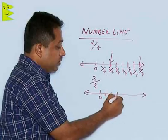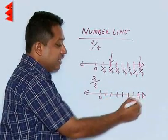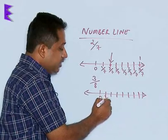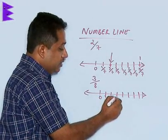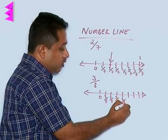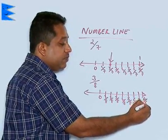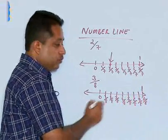We have 1, 2, 3, 4, 5, 6, 7 and 8 and these portions are all equal to each other. The first part is 1 by 8. This is 2 by 8, 3 by 8, 4 by 8, 5 by 8, 6 by 8, 7 by 8 and finally 8 by 8 which is actually 1.